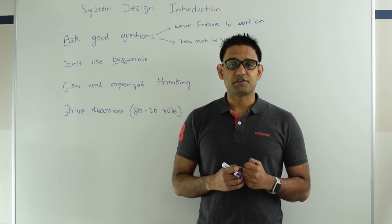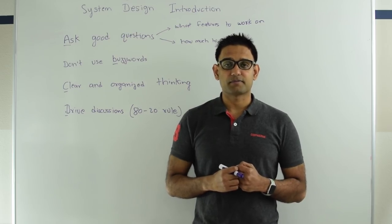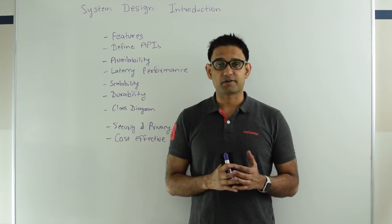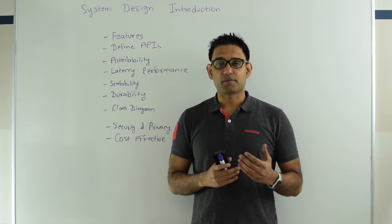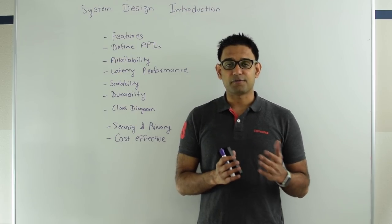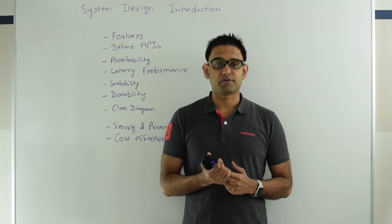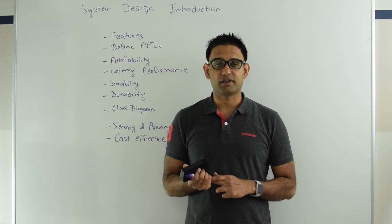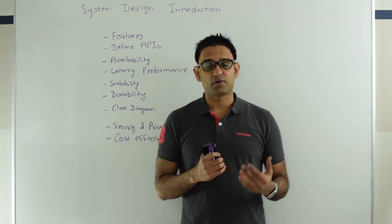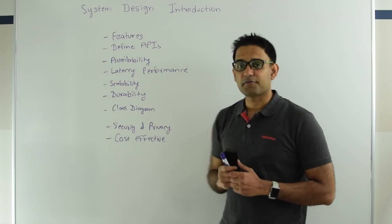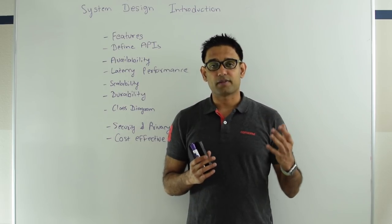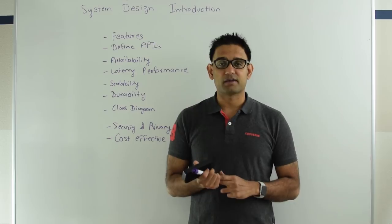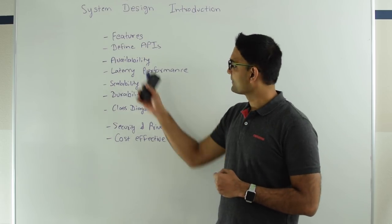So next let's talk about some of the basic features which is required in a system design problem solving. First thing you need to work with the interviewer is on the features. This goes back to defining the minimum viable product by asking good questions to the interviewer. For example, if interviewer asks you to design a Facebook messenger, then some features you would want to include is one-to-one chat and showing that the other party received the message and read the message. And some features could be excluded like group chat or security around those things. The second thing is defining APIs. Now that you are set on the features, you need to figure out what are the APIs for your service which are going to implement those features. So what are the APIs, who is going to call those APIs, how are they going to call those APIs.